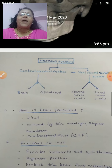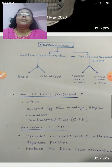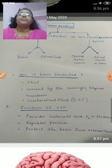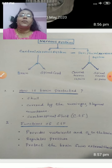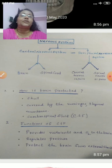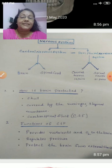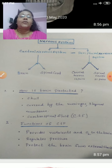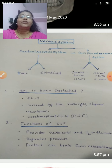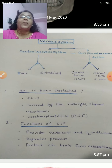What are the functions of cerebrospinal fluid? Cerebrospinal fluid provides nutrients and oxygen to our brain tissue. It regulates the pressure inside the brain and also protects the brain from external shock. These are the functions of cerebrospinal fluid, or CSF.